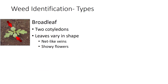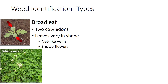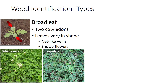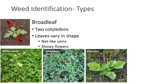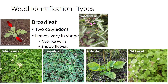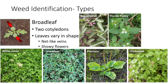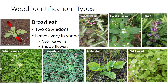Broadleaves are plants that have two cotyledons, or seed leaves, when the weed germinates. Their true leaves have net-like veins and usually have showy flowers. Examples include clovers, lespedeza, plantain, chickweed, beggar weed, Florida pusley, and henbit.